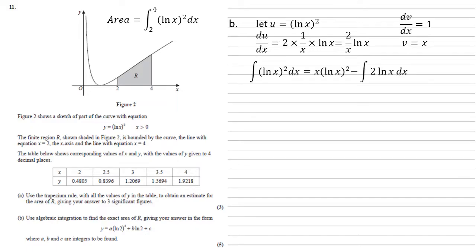So using our by parts rule, our integral is now going to be u times v, so x ln x squared minus v du dx. So our x times by the 2 over x ln x gives us 2 ln x dx.